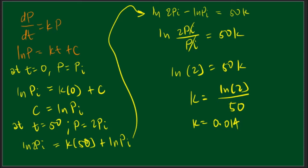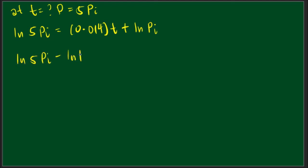So at t equals the unknown, that is the condition. Now this is what we are trying to solve. So P is five times. Substituting this one to the general solution, we have ln 5PI equals k, so our k is 0.014 times t, because t is what is required, plus ln P sub I. Transpose this to the other side. We have ln 5PI minus ln PI equals 0.014 t.